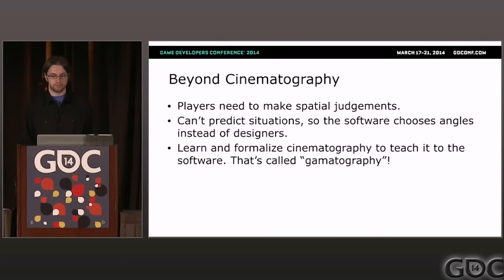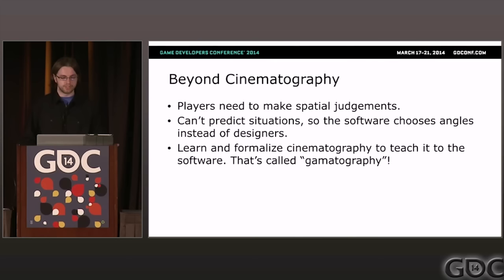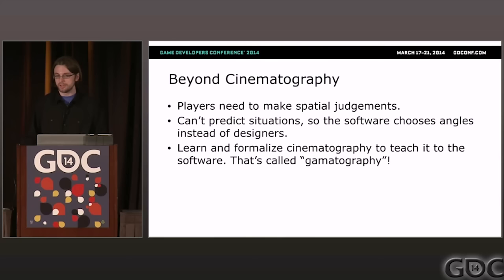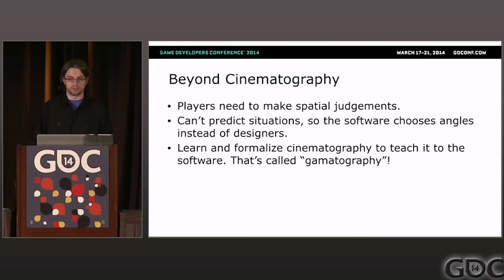We can certainly learn a lot from cinematography, but game cameras have a lot of their own special rules. Like in movies, camera operators can deliberately plan out each shot in detail, but as game designers we don't have that luxury. Everything in the game, including the camera, has to react to what the player is doing and adapt to the situation. In order for the game camera to adapt, we have to formalize the rules of good camera design and teach them to the software so it can do that on our behalf.